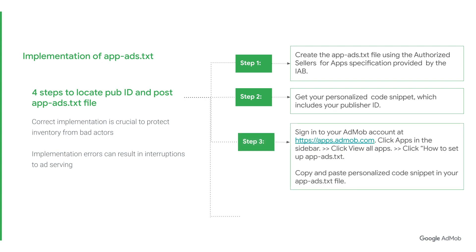Thereafter, sign in to your AdMob account at apps.admob.com. Click Apps in the sidebar, then click View All Apps. Click the Apex.txt tab, then click How to Set Up Apex.txt. Copy and paste your personalized code snippet into your Apex.txt file.